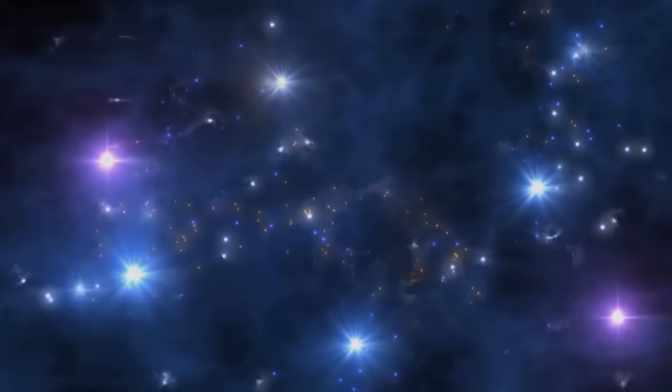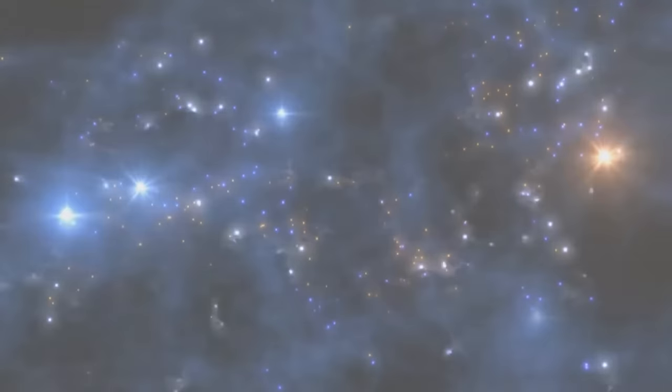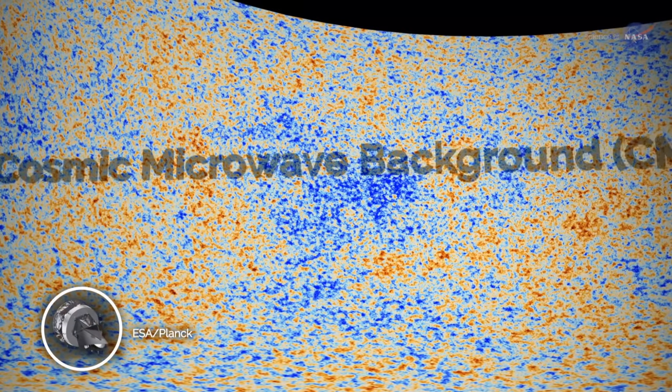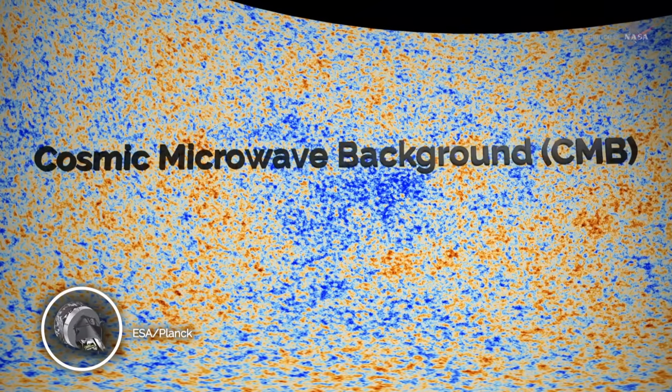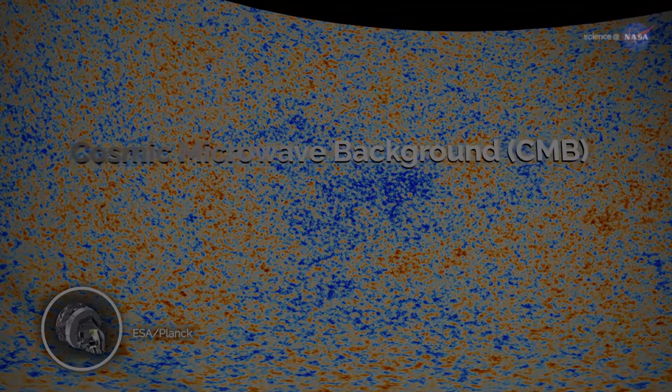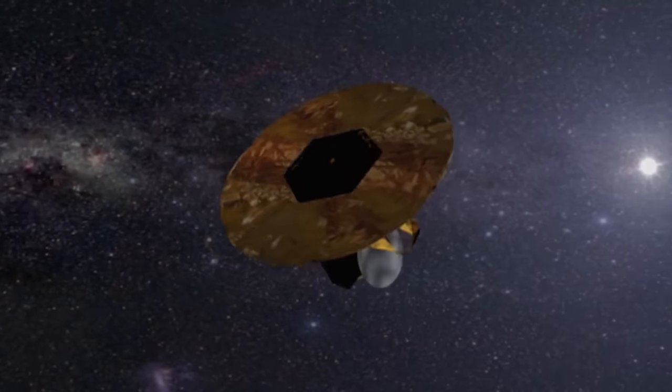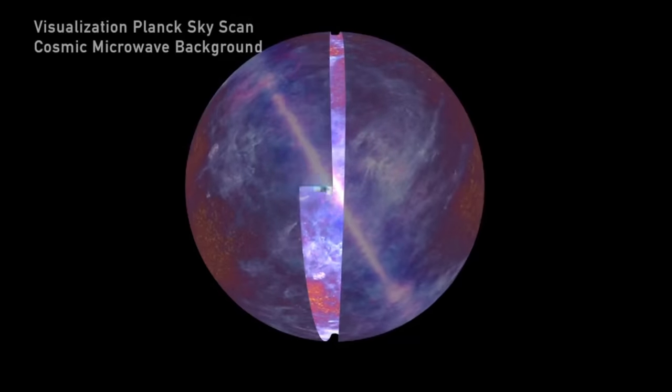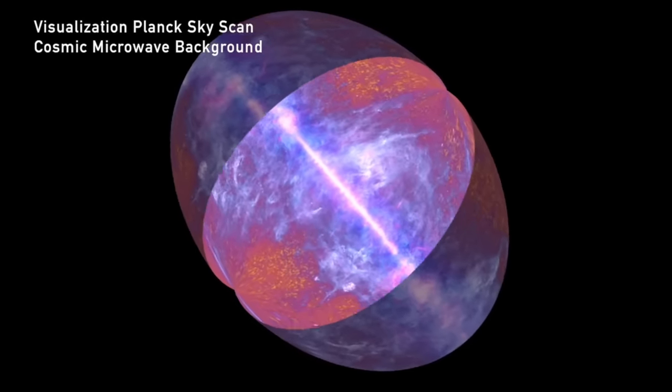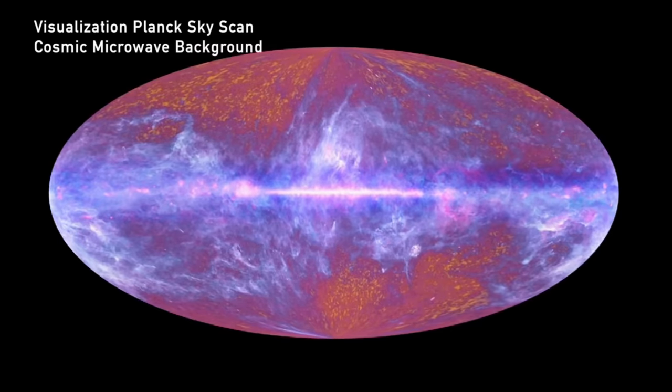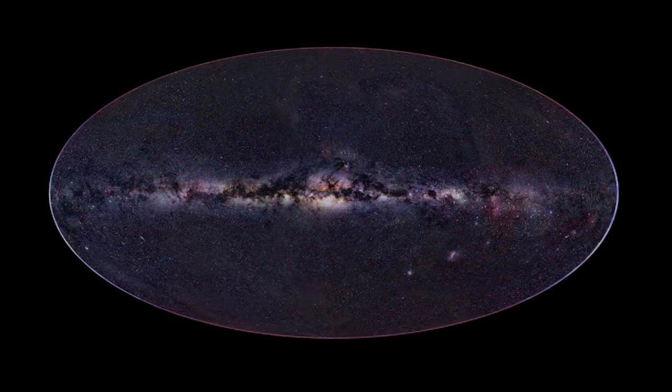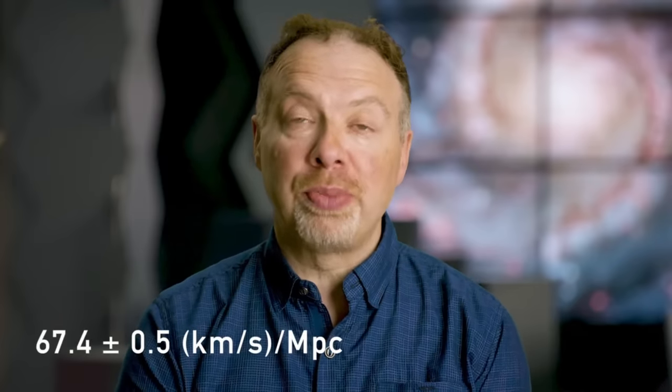The first involves poring over tiny fluctuations in the cosmic microwave background, an ancient relic of the universe's first light produced just 380,000 years after the Big Bang. Between 2009 and 2013, astronomers mapped out this microwave fuzz using the European Space Agency's Planck satellite to infer a Hubble constant of roughly 67 km per second per megaparsec.